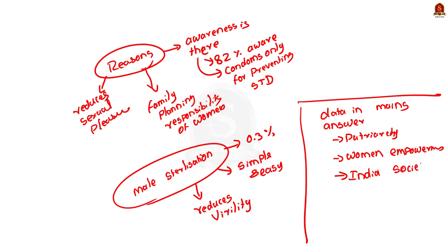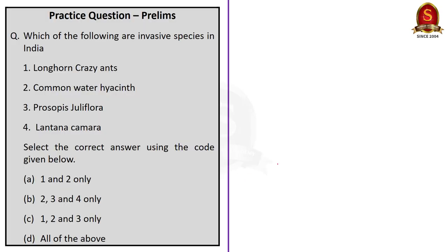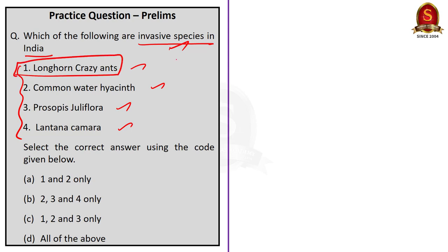We have come to the end of the newspaper analysis session. Now let us take up the practice prelims question — we have only one question today, regarding invasive species. The question asks: Which of the following are invasive species in India? The species given are longhorn crazy ants, common water hyacinth, Prosopis juliflora, and Lantana camara. The first species, longhorn crazy ants, is not an invasive species in India — the invasive species in India is yellow crazy ants. Except the first one, common water hyacinth, Prosopis juliflora, and Lantana camara are invasive species in India. The correct answer is option B: 2, 3, and 4.